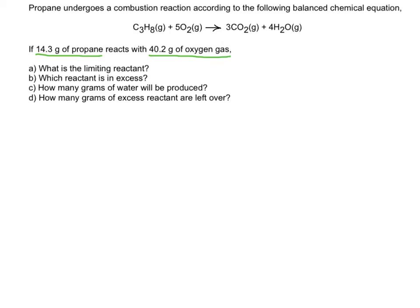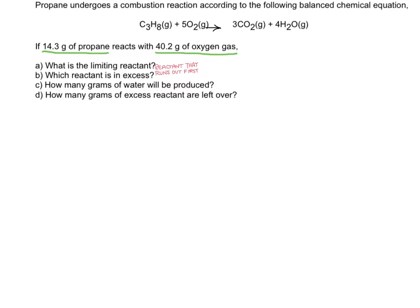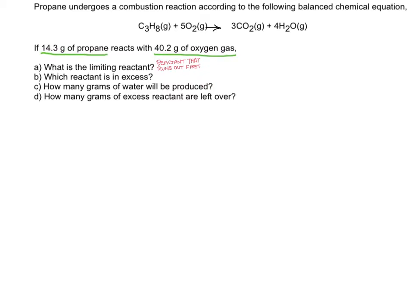The limiting reactant is the reactant that we'll run out of first. In order to determine the reactant that's going to run out first, we have to look at our balanced chemical equation. This works just like a recipe. These coefficients refer to the number of moles of each compound. If there's no number, that's just a one.